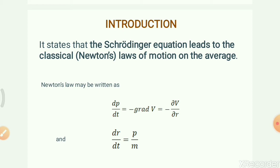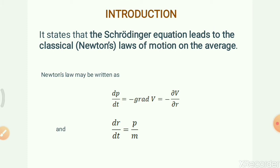The Ehrenfest theorem is a correspondence principle, like Bohr's correspondence principle. Just as Bohr's correspondence principle establishes a bridge between quantum mechanics and classical mechanics — when the quantum mechanical orbit's size and energy become large, we move toward classical mechanics — similarly, the Ehrenfest theorem is also a bridge between classical mechanics and quantum mechanics.